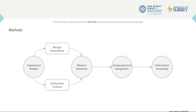First, explorative models were made to define design parameters, informing the creation of various bending modules. These modules are evaluated based on ease of assembly, which relates to simplicity of the tensioning mechanism and capacity to aggregate into complex 3D geometries. Lastly, the modules are integrated into a shell geometry through a computational design workflow, from which a 1 to 20 scale prototype was constructed.